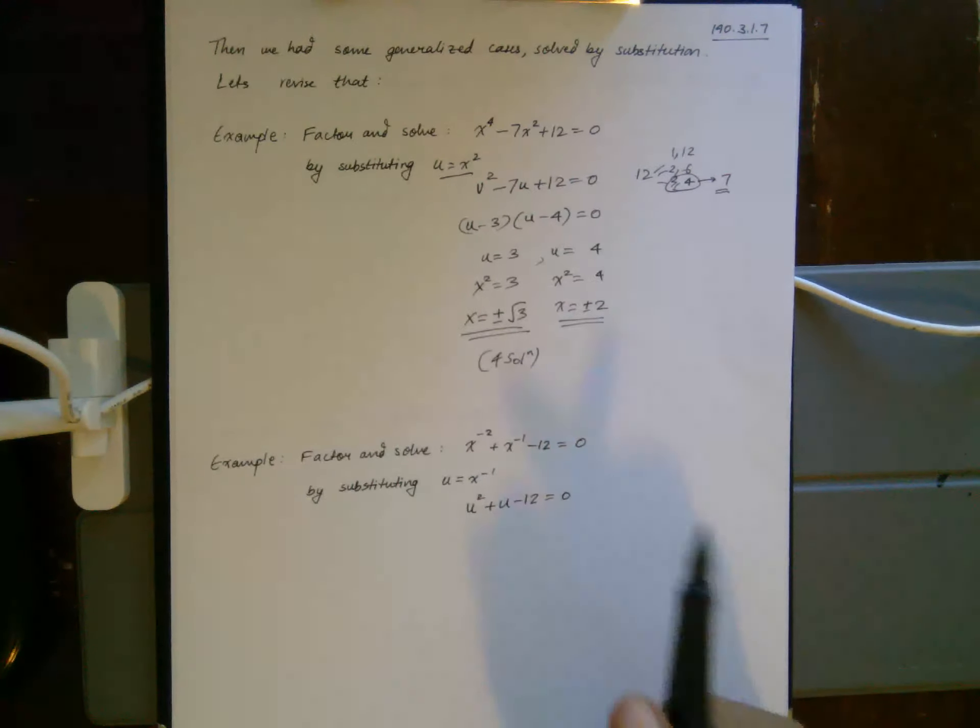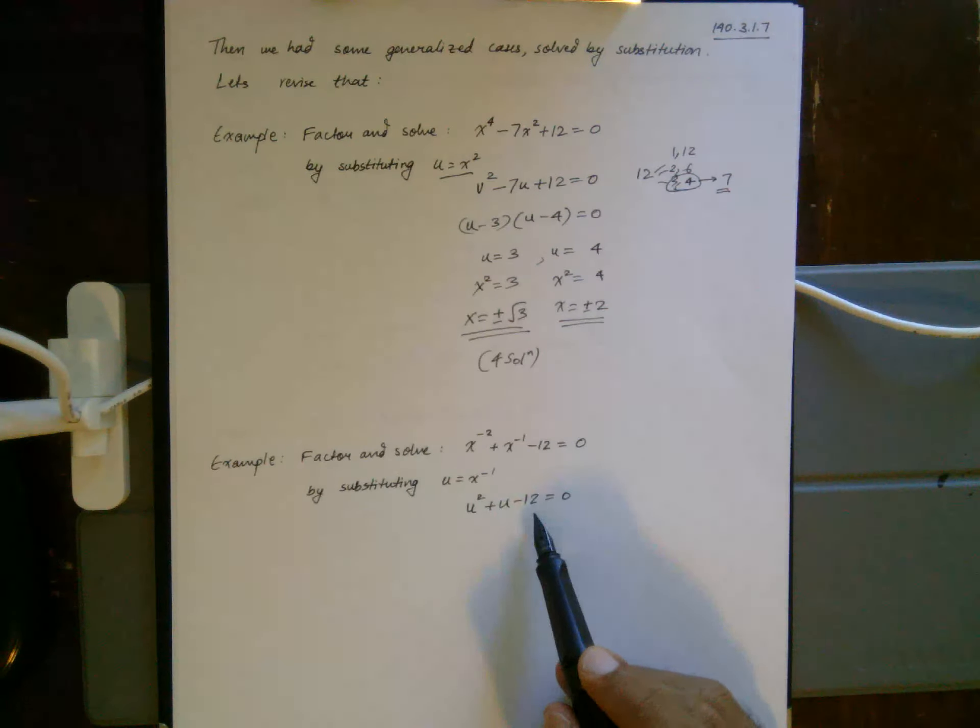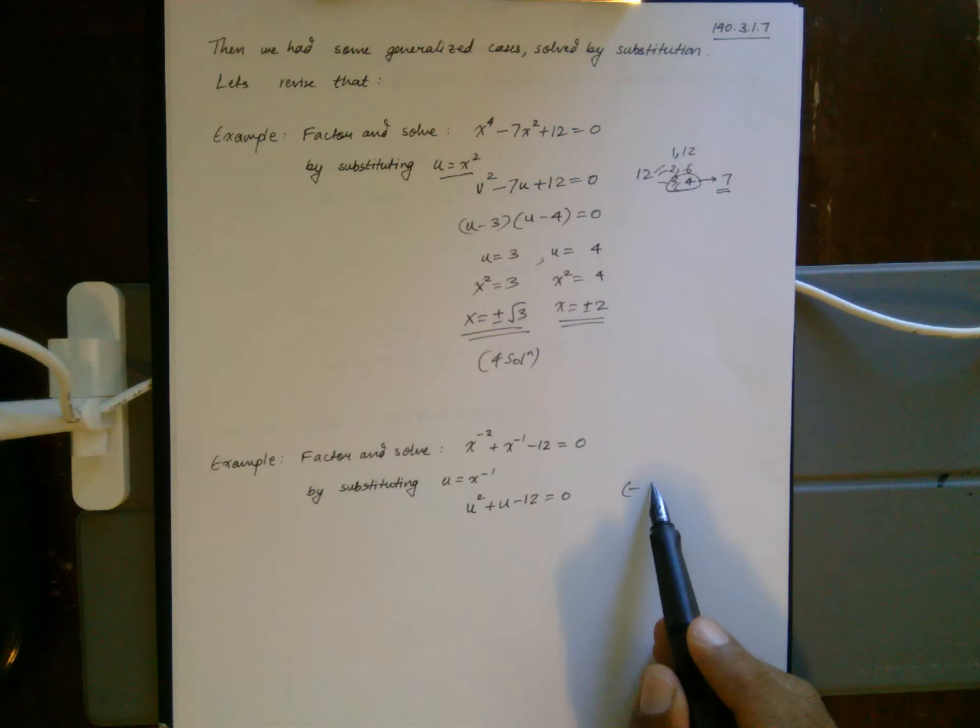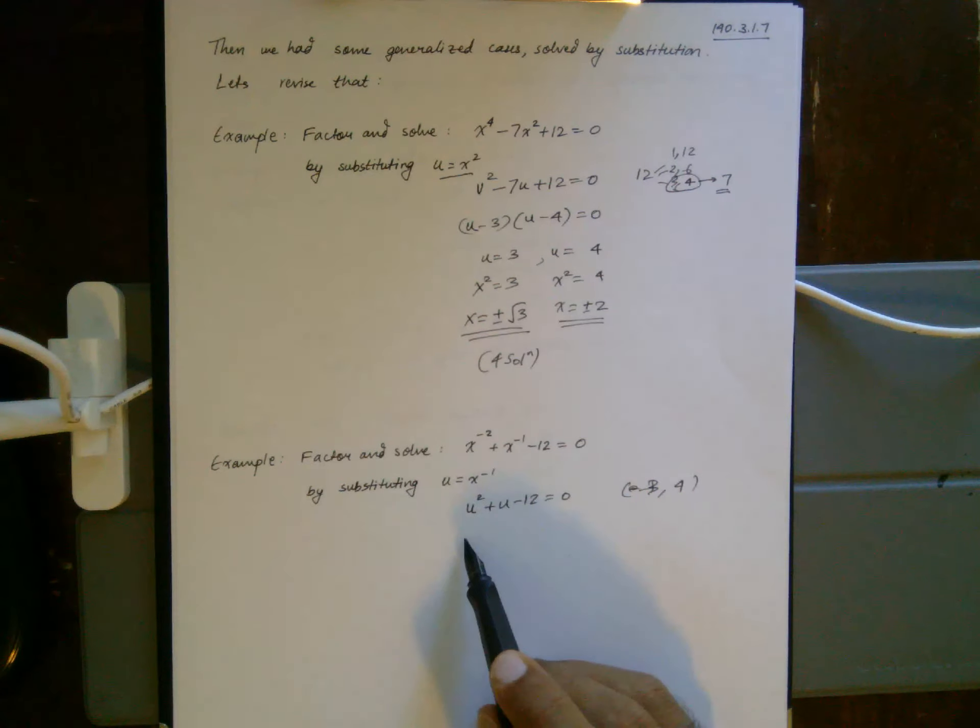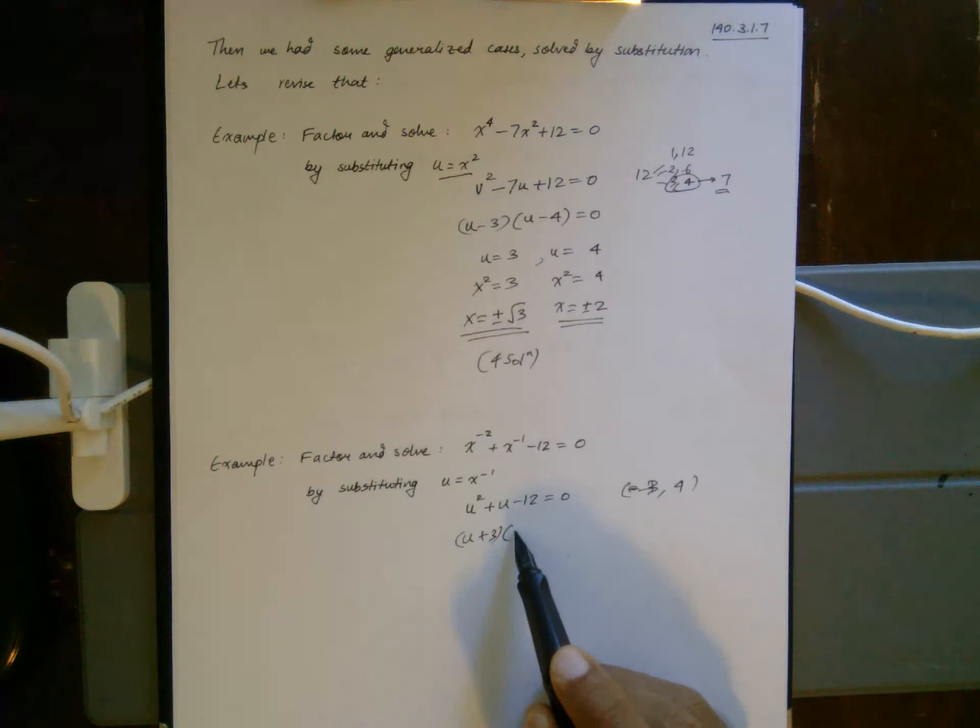Now I need two numbers whose sum is 1 and product is negative 12. I'm going to use negative 3 and positive 4, so this is going to be (u minus 3) and (u plus 4).